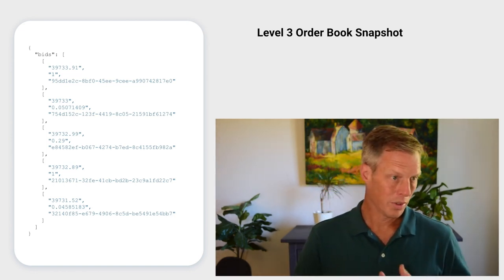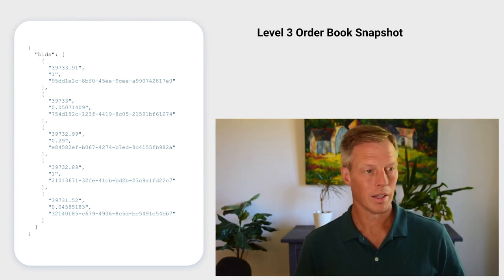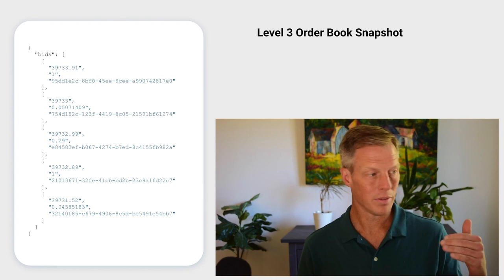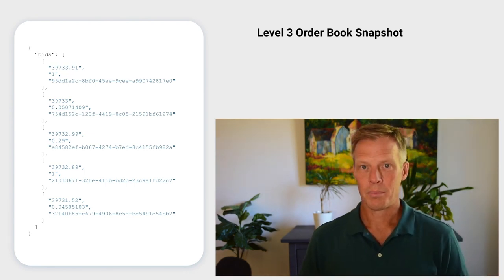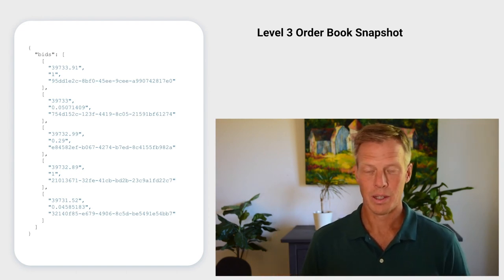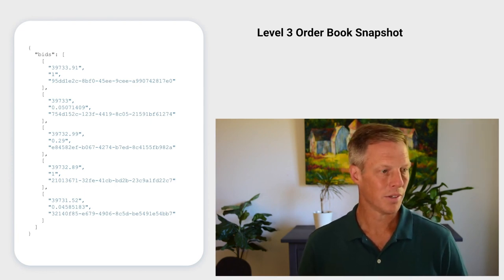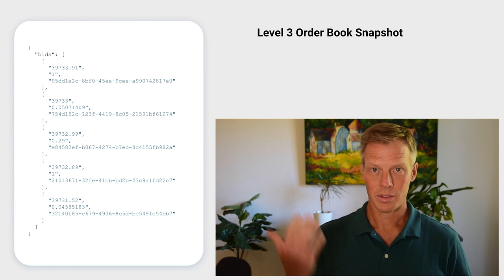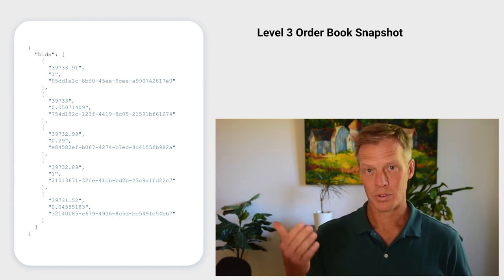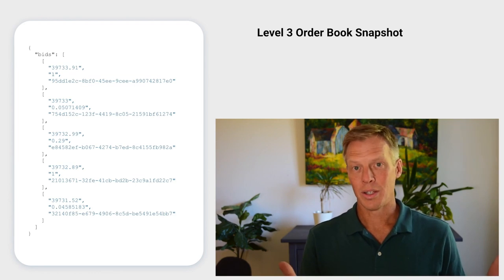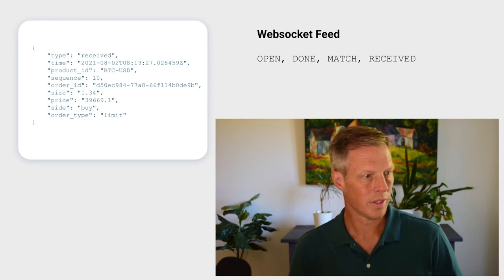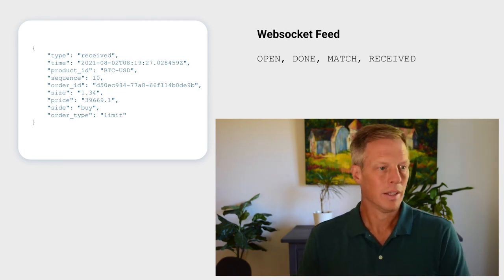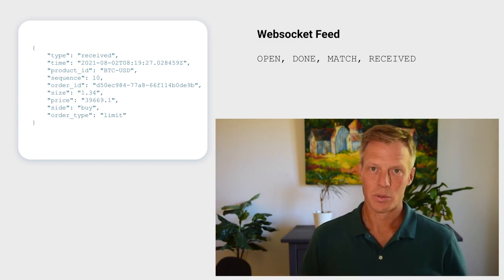On Coinbase, we can request a level 3 order book snapshot, which gives us a JSON list of all the orders at every price level on the bid and ask side. But this ends up being a large file — about three megabytes — so even with a fast internet connection, from the time we request the snapshot to the time we receive it, if orders are happening every millisecond, our data is already out of date. The solution is to also subscribe to a WebSocket feed that provides messages containing just the changes in the order book snapshot.